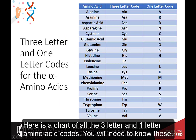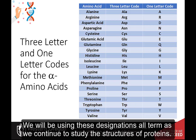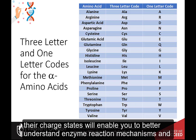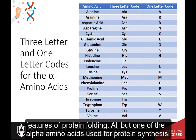Here is a chart of all the three-letter and one-letter amino acid codes. You will need to know these. We will be using these designations all term as we continue to study the structures of proteins. Knowing their abbreviations and being able to recognize their side groups and understand their charge states will enable you to better understand enzyme reaction mechanisms and features of protein folding.